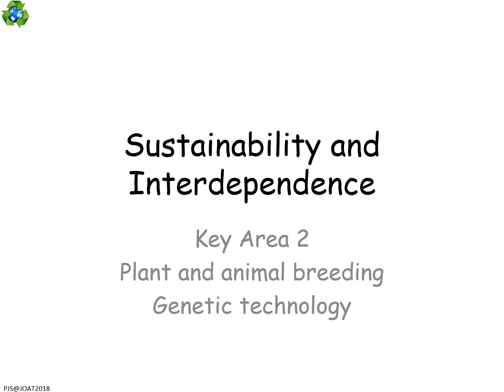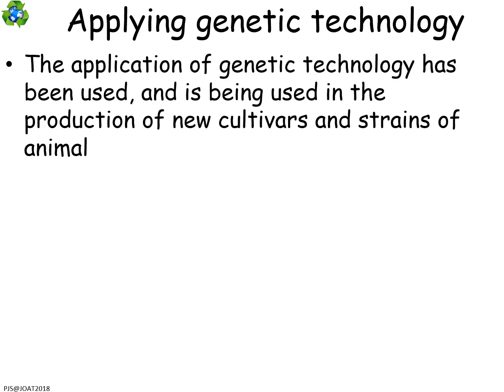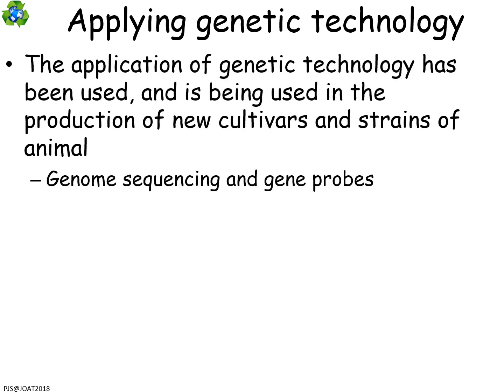Still on sustainability and interdependence, but in plant and animal breeding we're looking at how genetic technology is moving us forward in what we can do. We can use applied genetic technology in plant and animal breeding — it doesn't have to just be at the level of the microbe, which we covered in the last unit.